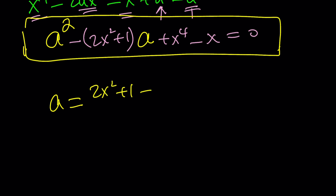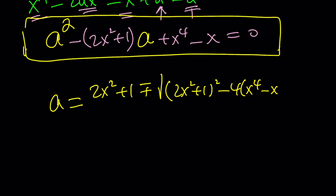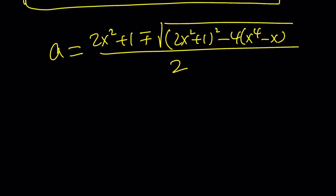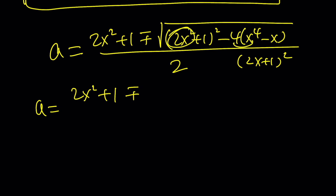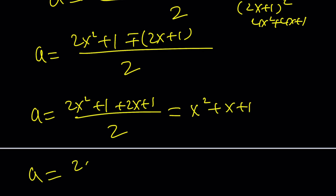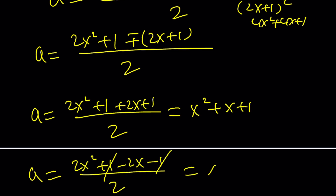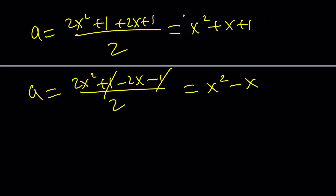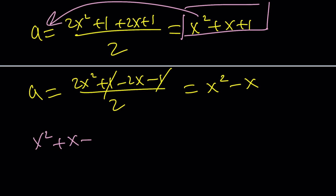Treating x as a constant, we solve for a using the quadratic formula: a equals negative b plus or minus the square root of b squared minus 4ac, all divided by 2. The expression inside the radical turns out to simplify beautifully — 4x to the fourth minus 4x to the fourth cancels, leaving 4x squared plus 4x plus 1, which is (2x + 1) squared. So the square root is 2x + 1. Splitting the plus/minus gives two values: a equals (2x squared + 1 + 2x + 1) / 2 = x squared + x + 1, and a equals (2x squared + 1 - 2x - 1) / 2 = x squared minus x.